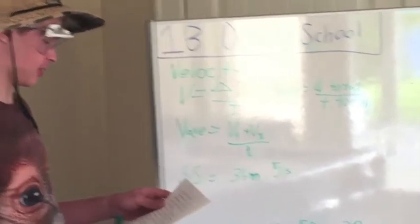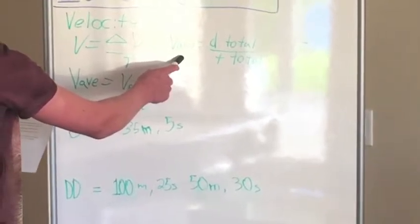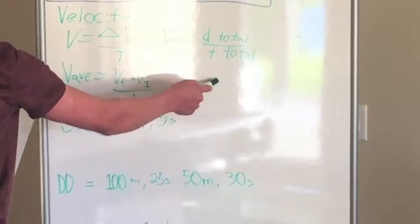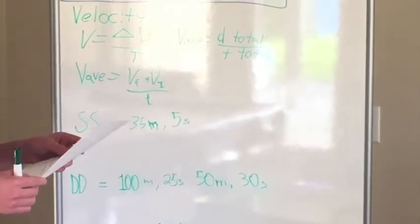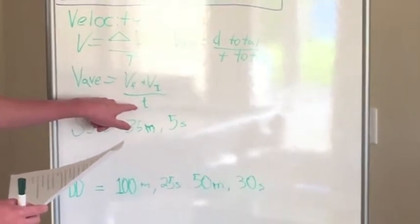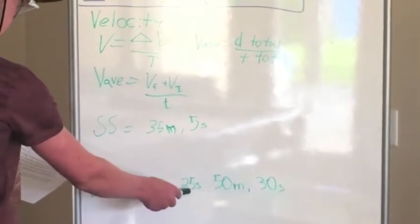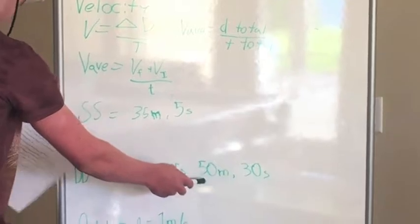The next type of velocity is average. The formula is velocity average equals distance total divided by time total. And if there's constant acceleration, you can use velocity average equals velocity final plus velocity initial divided by 2. Driving Danny drove 100 meters in 25 seconds, then 50 meters in 30 seconds. What was his velocity? I did 100 meters plus 50 meters divided by 25 seconds plus 30 seconds. I got 150 divided by 55, which is 2.7 meters per second. Correct.